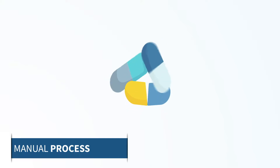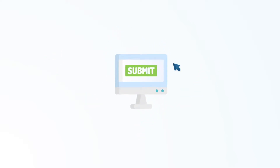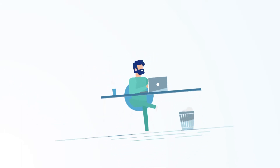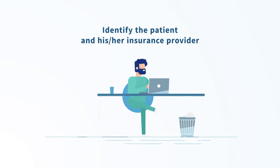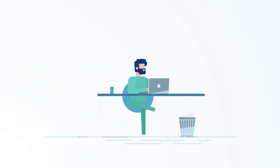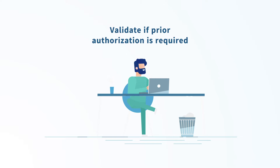Before we dive into the demo, let's take a look at what the manual process looks like. Typically, the process begins when a prescription or procedure is submitted into an order entry system. The nurse or admin then identifies the patient and his or her insurance provider, and needs to validate whether or not a prior authorization is required for the requested prescription or procedure.